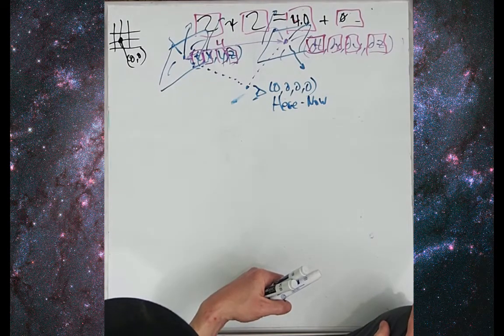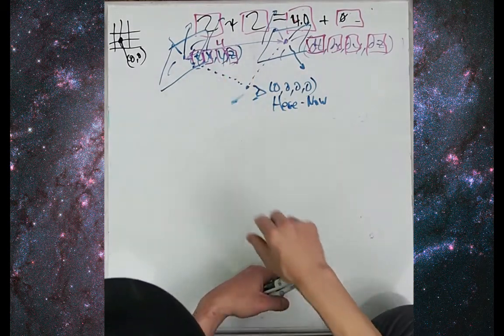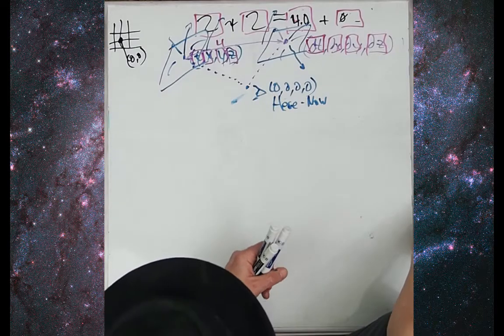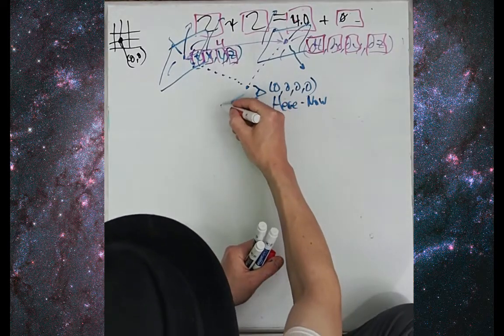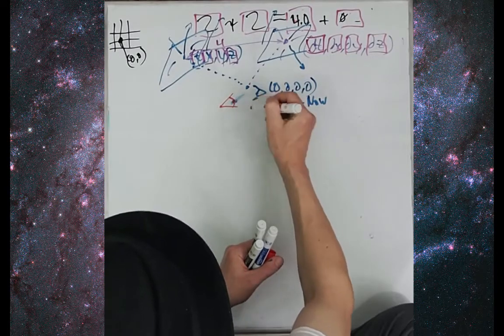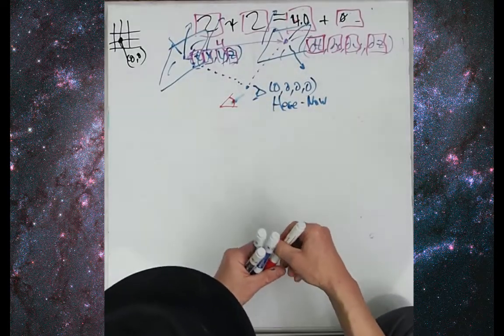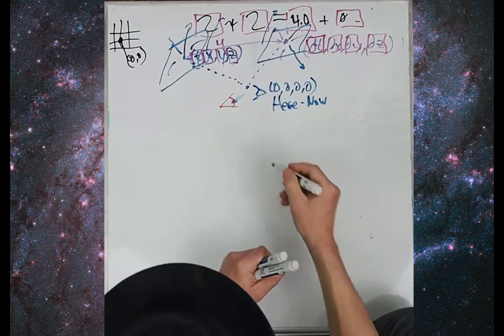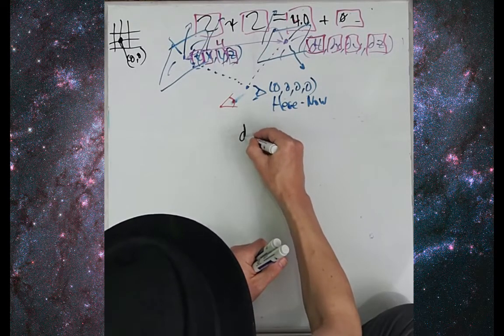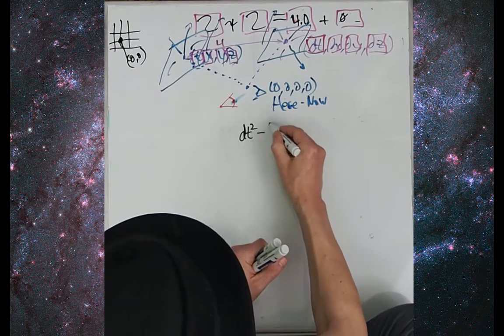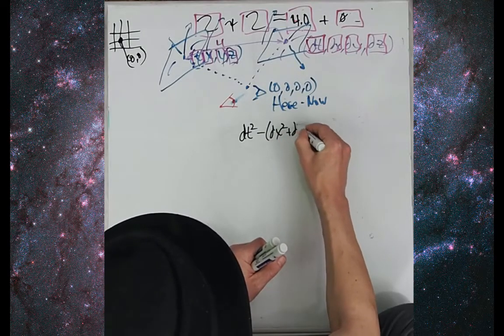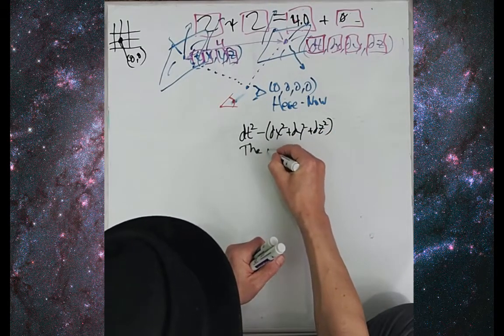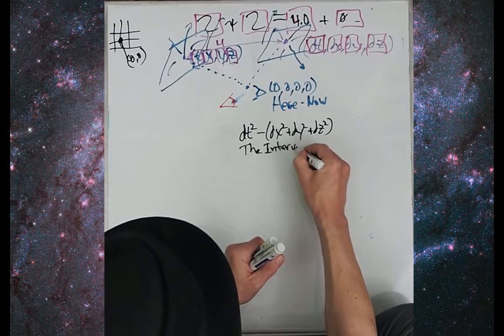So what do we do with this difference of events? Well, not too much. What is actually more interesting is thinking about what could two different observers agree upon. And that came out of Einstein's work in special relativity. And what they can agree about is the interval. So let us write the interval dt squared minus dx squared plus dy squared plus dz squared.